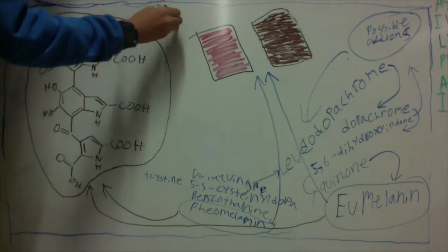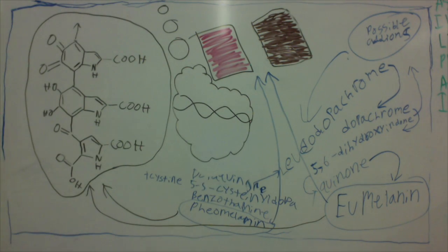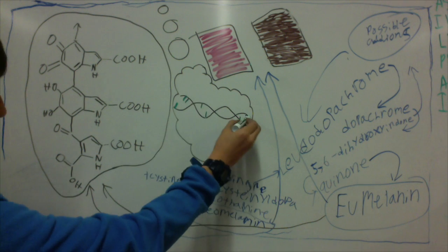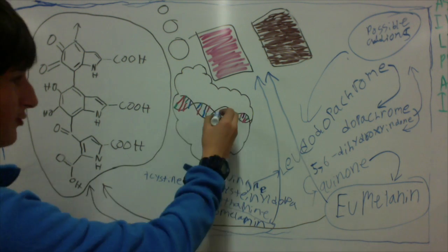When the pheomelanin and eumelanin polymerize, you get a pink color from the pheomelanin and brown color from the eumelanin, which colors your skin those colors.